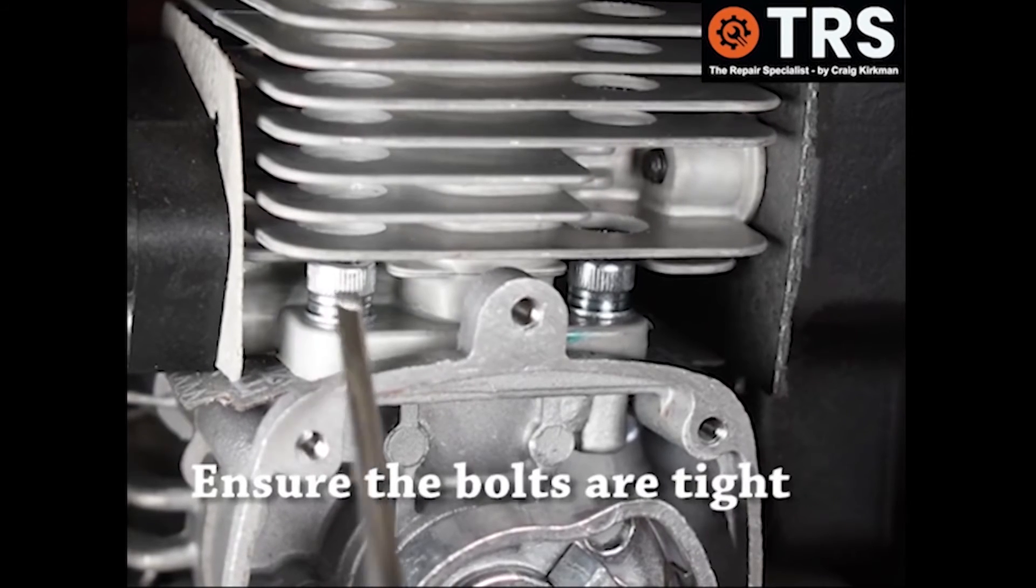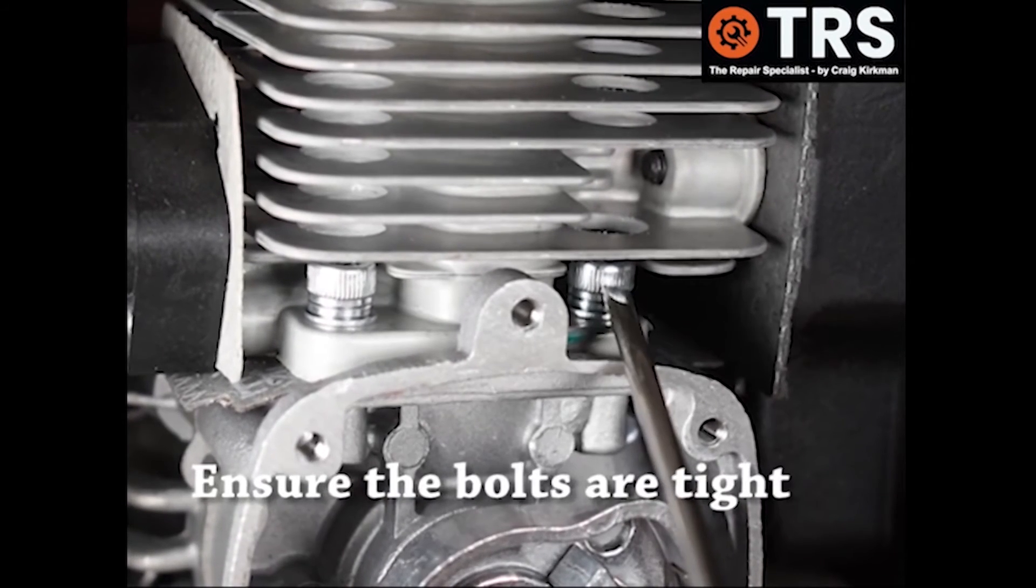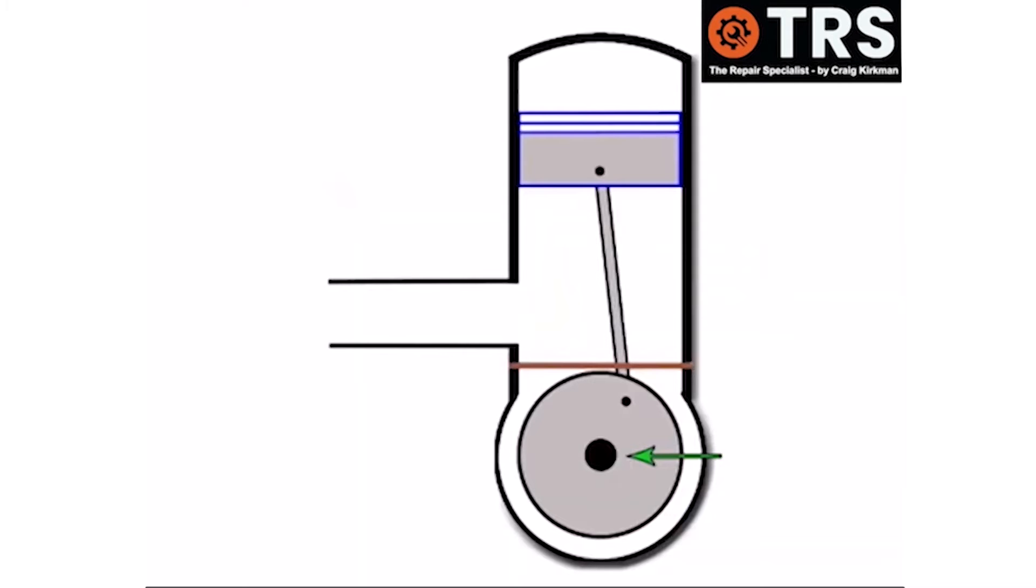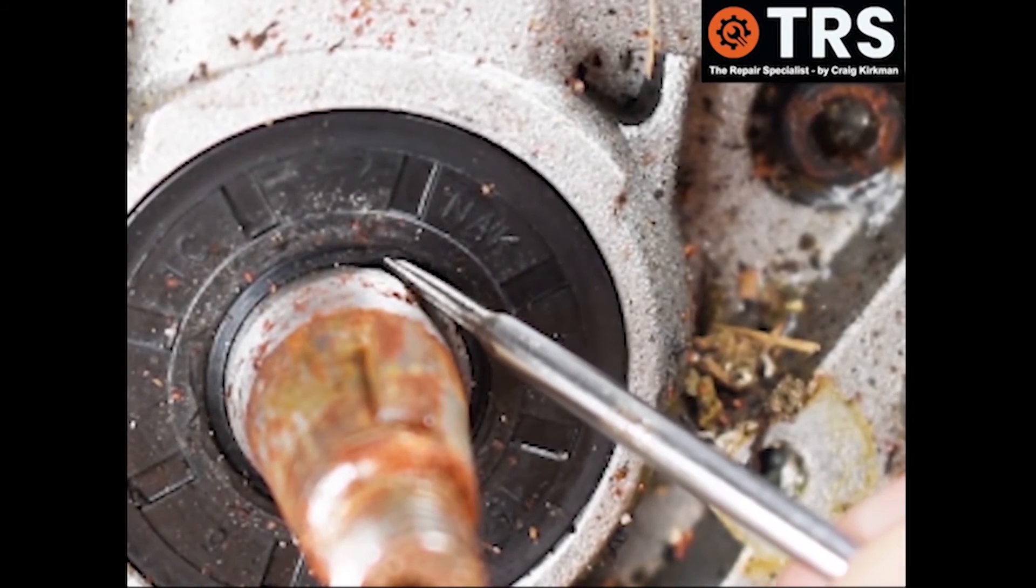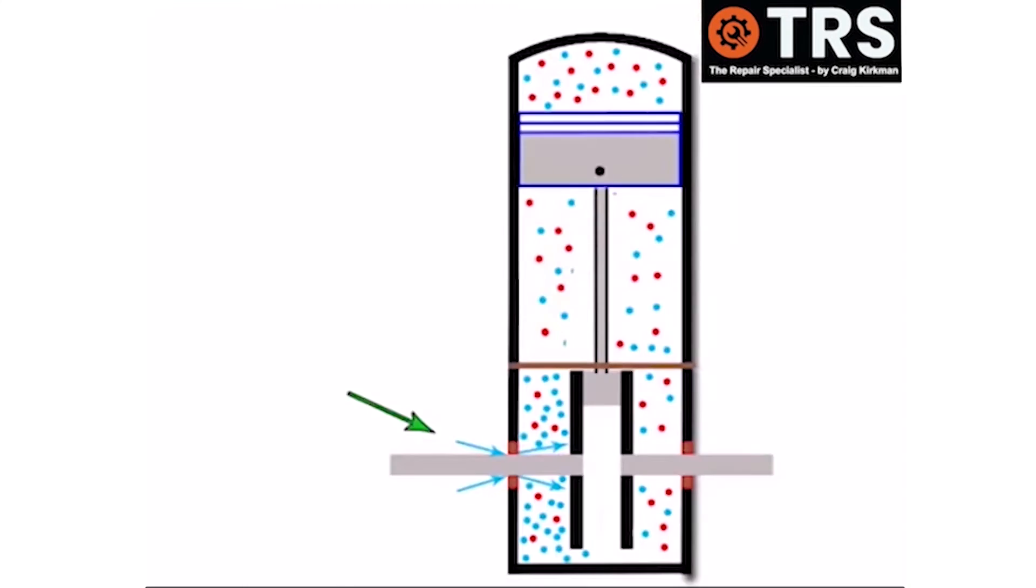We'd get the same problem by the way if the bolts were loose that held the crankcase to the barrel. And the main seals of course are here, and if those seals are damaged in any way it can draw air into the crankcase. There's going to end up being too much air to fuel.